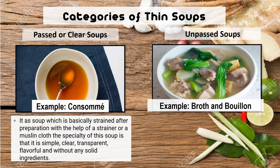What is consommé? The word consommé comes from the French word which means 'consume' or 'finish.' It refers to a more complete soup than a stock or broth. It is a clear liquid that results from clarifying homemade stock, usually done with an egg white. The best example of passed or clear soup is the consommé. It is strained after preparation with the help of a strainer or muslin cloth. The specialty of this soup is that it is simple, clear, transparent, flavorful, and without any solid ingredients, as you may observe in the picture.